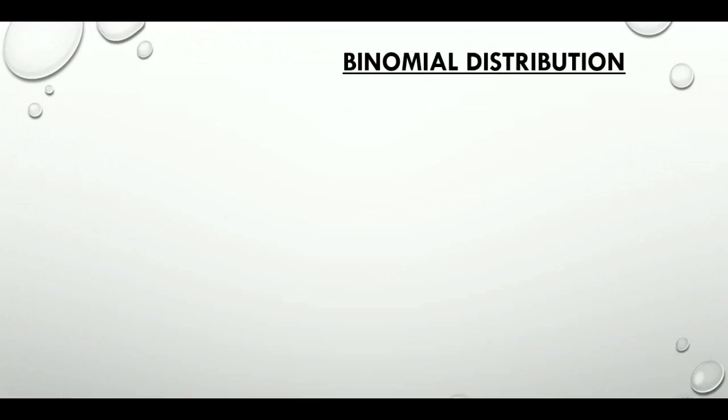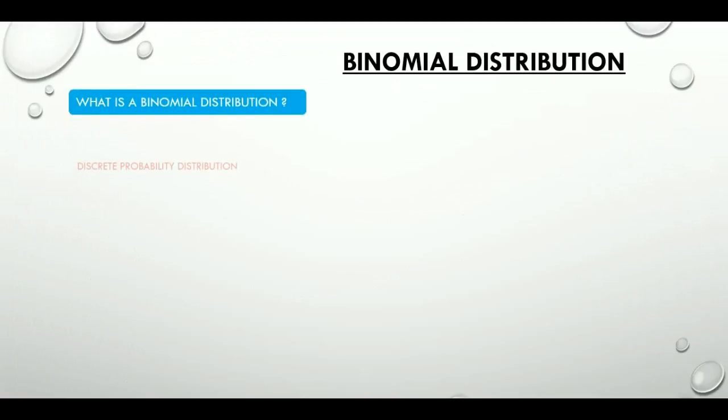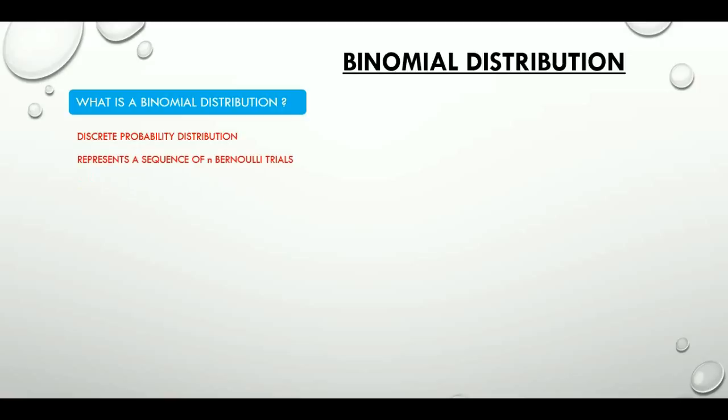Binomial distribution is a discrete probability distribution which represents a sequence of n Bernoulli trials. A Bernoulli trial or binomial trial is a random experiment with exactly two possible outcomes — success and failure — in which the probability of success is the same every time the experiment is conducted.